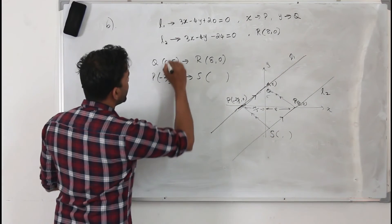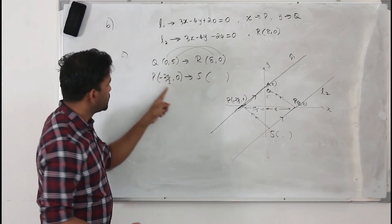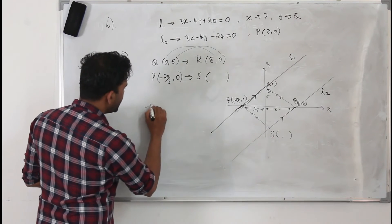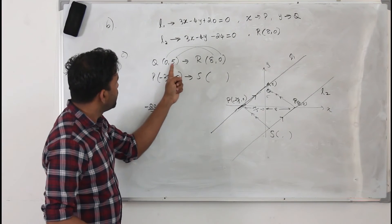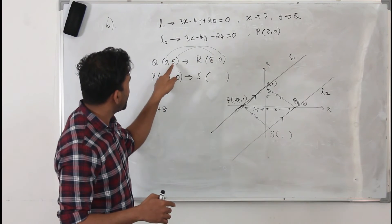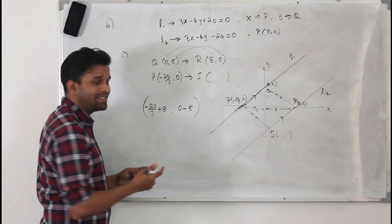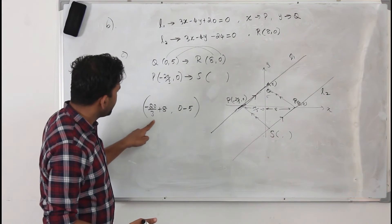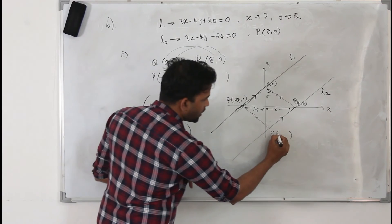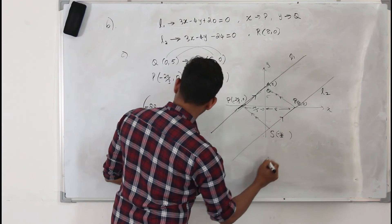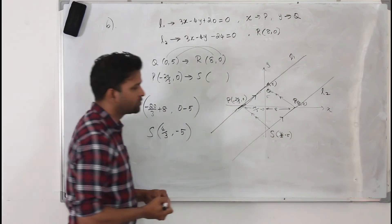Q is at (0, 5) and maps to R at (8, 0). The x-coordinate increased by 8, and the y-coordinate decreased by 5. Apply the same change to P: x-coordinate of S equals minus 20/3 plus 8 equals 4/3. Y-coordinate of S equals 0 minus 5 equals minus 5. So S is at (4/3, minus 5).